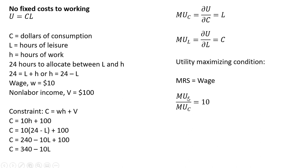Marginal rate of substitution is the marginal utility of leisure divided by the marginal utility of consumption. So C divided by L equals 10.